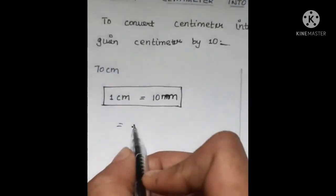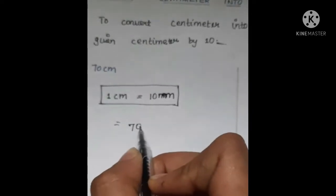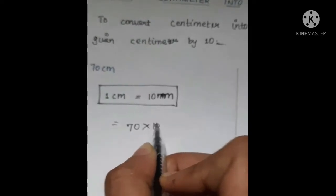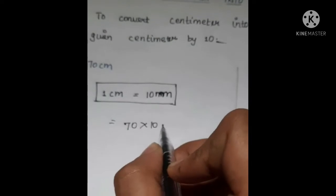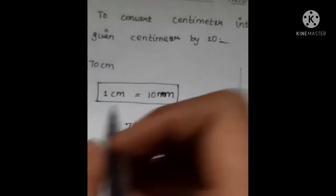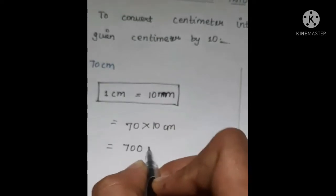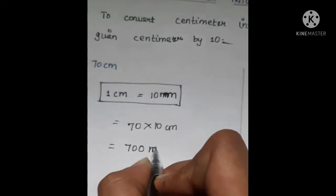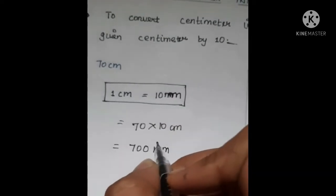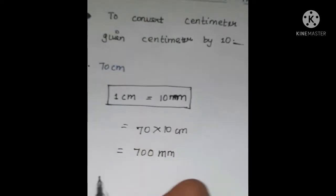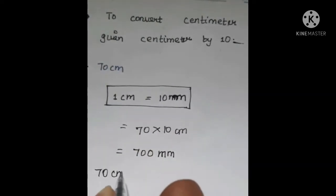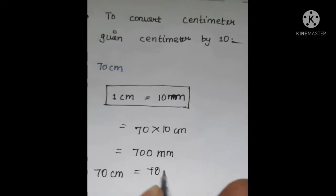We have to multiply it: 7 times 10. We get 700 millimeters. So 70 centimeters equals 700 millimeters.